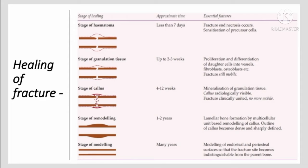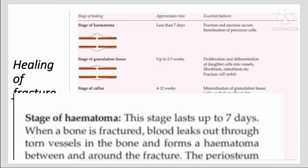There are five stages in the healing of a fracture. The first is the stage of hematoma, which lasts for less than seven days. When a bone is fractured, blood leaks out through the torn vessels in the bone and forms a hematoma between and around the fracture site.